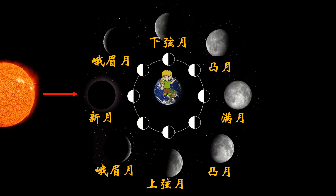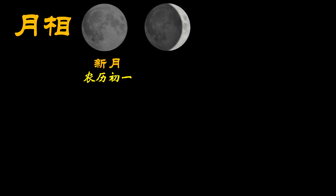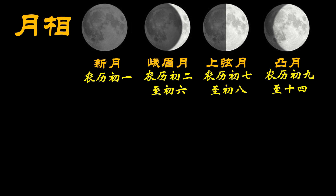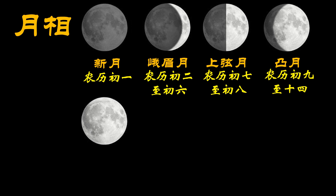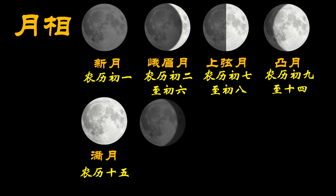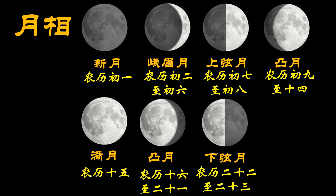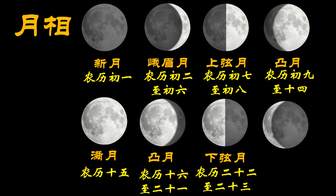我们已经学习怎么看月象的图表了。月象是有规律地发生的，接下来让我们一起来看看每一个月象在什么时候会发生。新月发生在农历初一；峨眉月，农历初二至初六；上弦月，农历初七至农历初八；突月，农历初九至农历十四；满月，发生在农历十五；突月，农历十六至二十一；下弦月，农历二十二至农历二十三；最后的峨眉月，农历二十四至三十。峨眉月结束过后又会回到了新月。(Lunar phases follow a regular pattern. New moon: 1st day of lunar month; crescent: 2nd–6th; first quarter: 7th–8th; gibbous: 9th–14th; full moon: 15th; gibbous: 16th–21st; last quarter: 22nd–23rd; crescent: 24th–30th. After the final crescent, the cycle returns to new moon.)